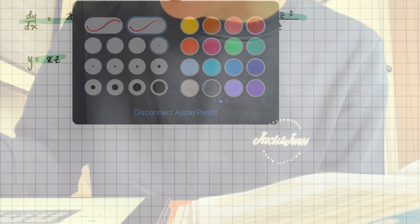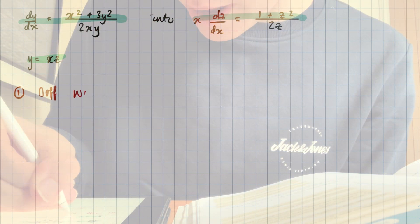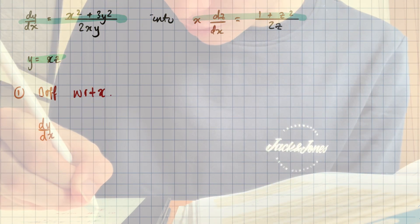Okay. Show that that transformation, Y equals X times Z. That transformation can convert that into that. First thing we need to do is, number one, differentiate with respect to X.